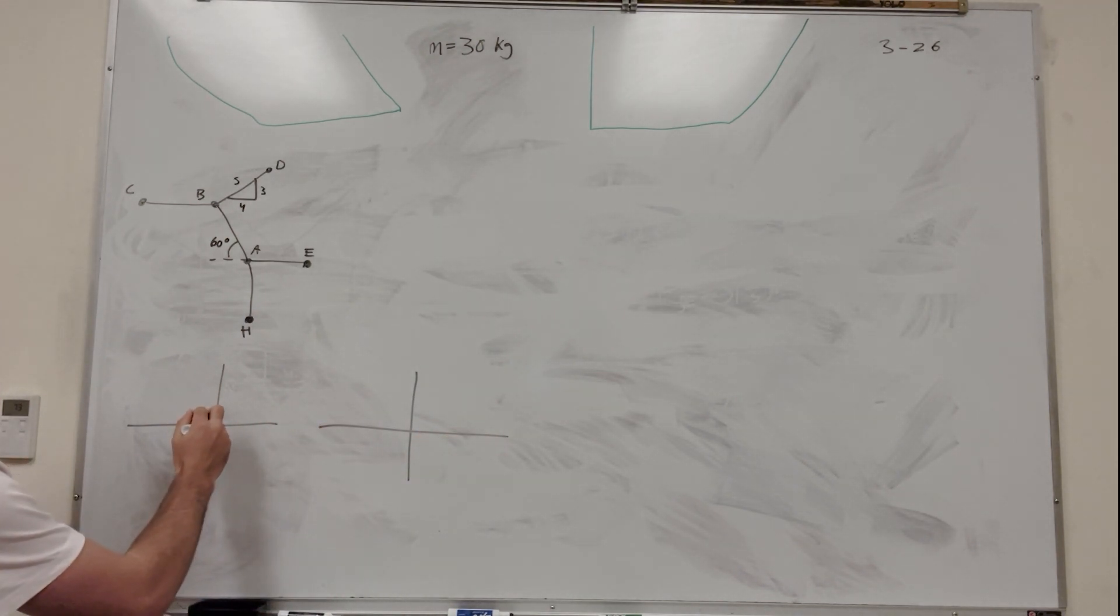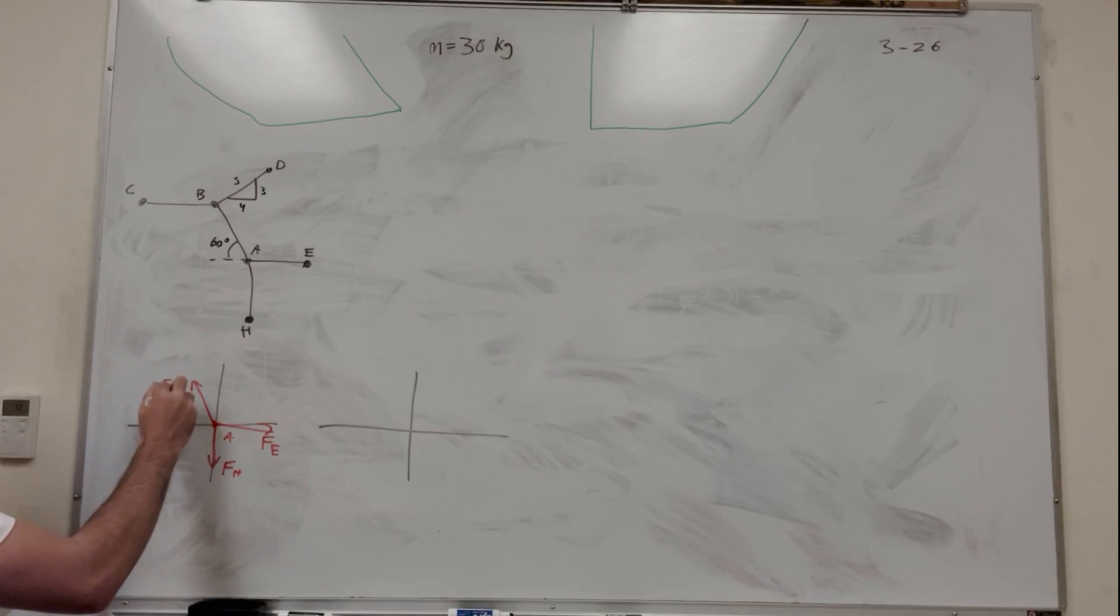So let's go at A first. So here's A. So there's force here, this is force of H. And then there's this one, we'll call force of E. And then there's this one, we'll call maybe AB force. And then we know that this is a 60 degree angle. Cool.